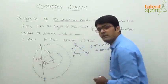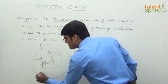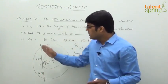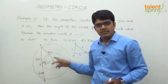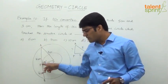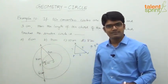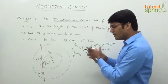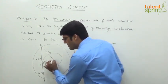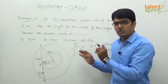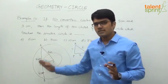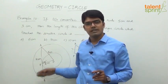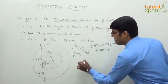So AP is 4 centimeters, and PB will also be 4. There is an important property here: the point of contact of the chord with the smaller circle bisects the chord of the larger circle. Or alternatively, we know that from the center, when you drop a perpendicular on the chord it bisects it — divides it into two equal halves. So if AP is 4, then PB is also 4.